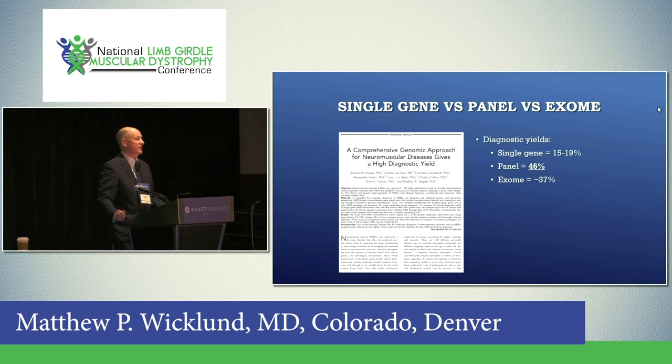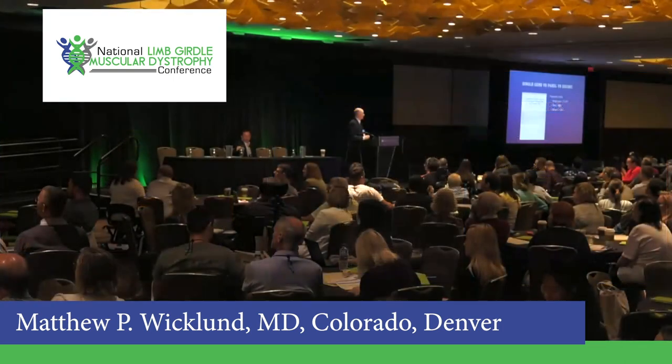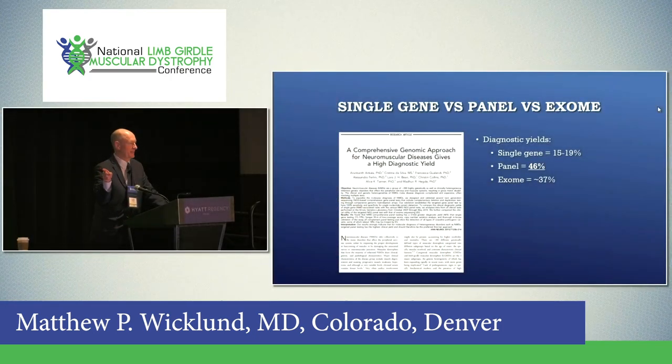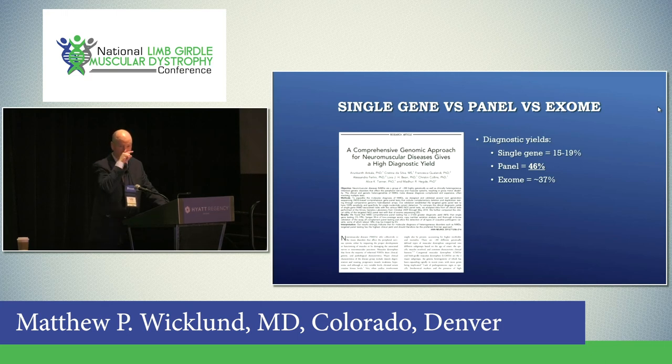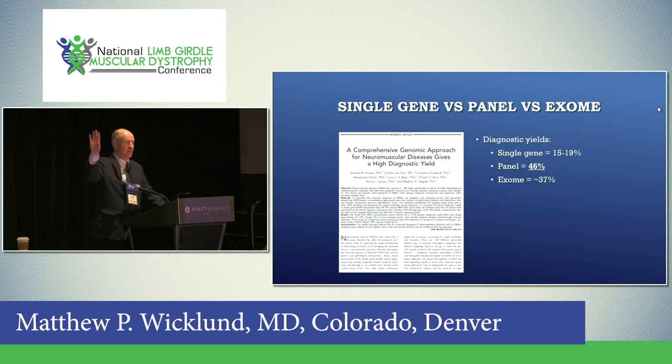Diagnosis — this has changed. Many of you have gone through or are still going through a diagnostic odyssey. In the old days we would check for one gene at a time — not very effective. Nowadays, either gene panels or exomes are the most reasonable route. The diagnostic yield is in the 30% to 40% range. The challenge is that still leaves 60% of patients without a diagnosis through those means.